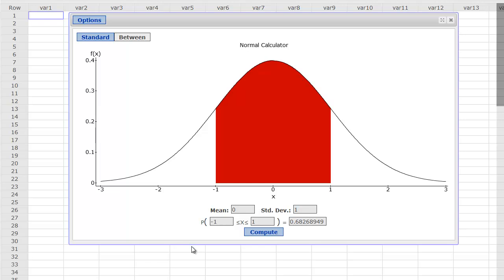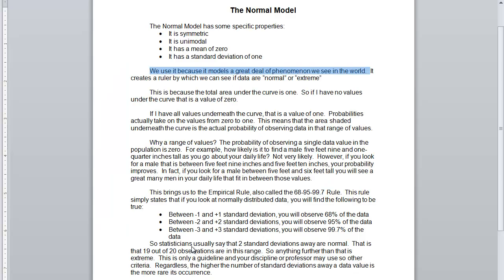One example that you might be familiar with is that in North America, the average height of a male is 5 feet 10 inches tall. So 5 feet 10 inches is going to be the most frequent value. Then you're going to have from 5 foot 8 maybe to 6 feet where a bunch of men are going to be. But we don't see a lot of 4 foot tall men—that would be far away from the mean. And we don't see a bunch of men 6 foot 8, so that would be far away from the mean. I get less and less data the further away I go. And so it actually creates a ruler by which we can see if data are normal or extreme by where they are on the normal model.